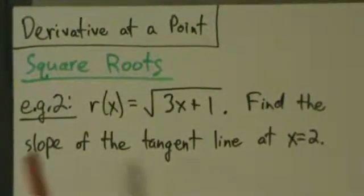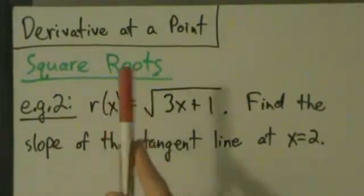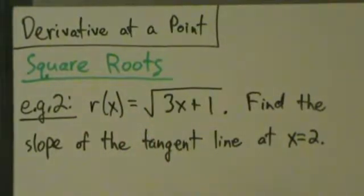All right, so here's another example with finding derivatives of functions at a point that have square roots in them. First of all, in the last video with example 1, the numbers worked out kind of nicely. You know, we had square root of 9, and that simplified nicely.